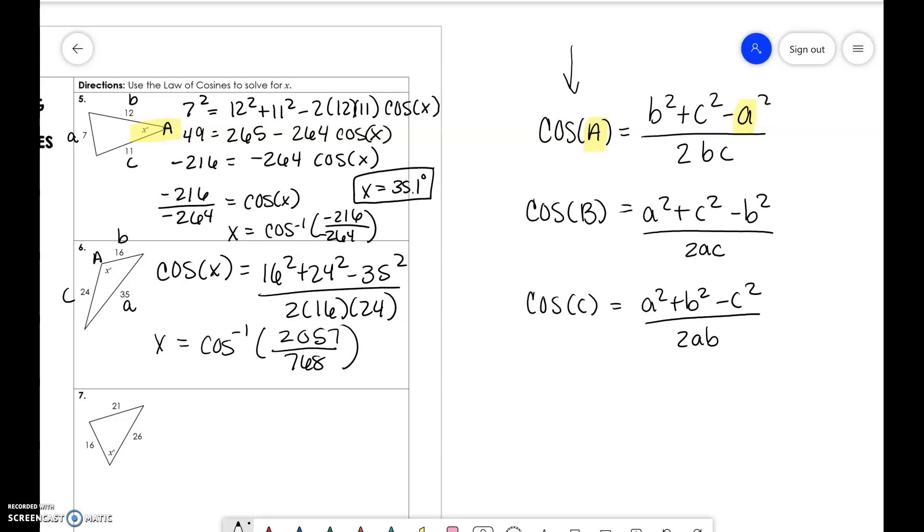I may have done that wrong. Yep, this is wrong. I accidentally did plus 35. So minus. So we get negative 393. And you get x is 120.8 degrees.